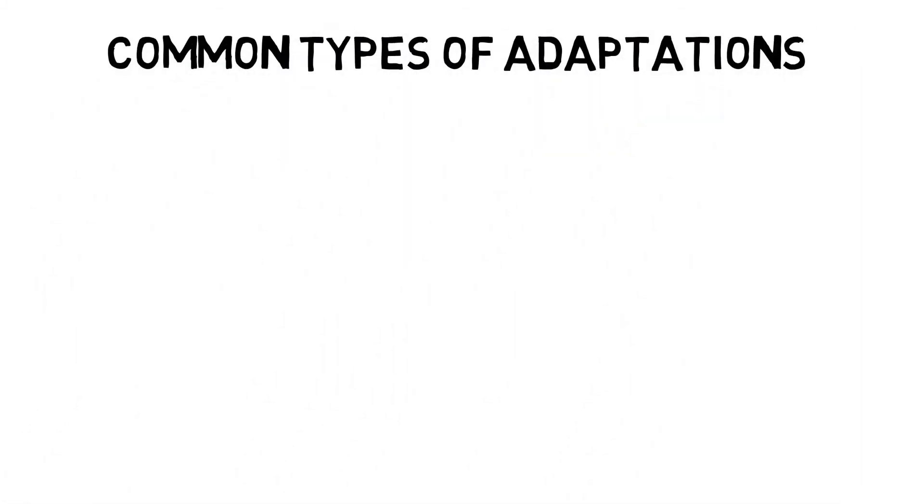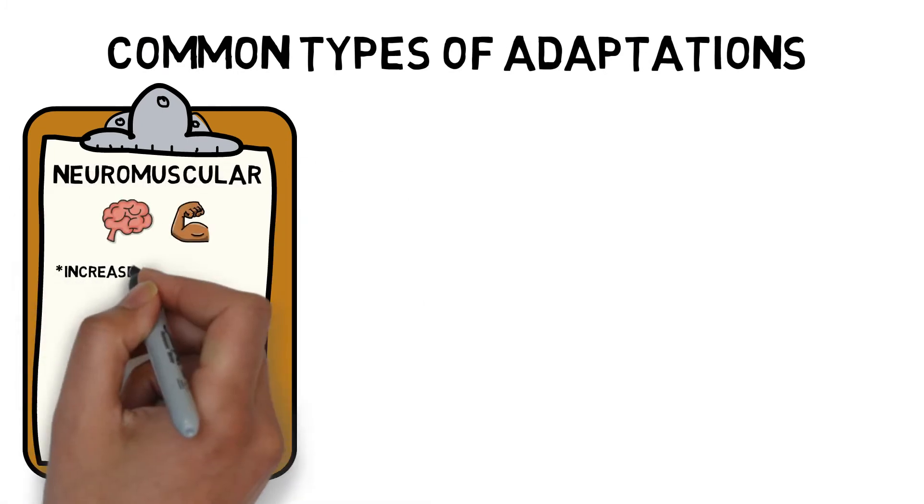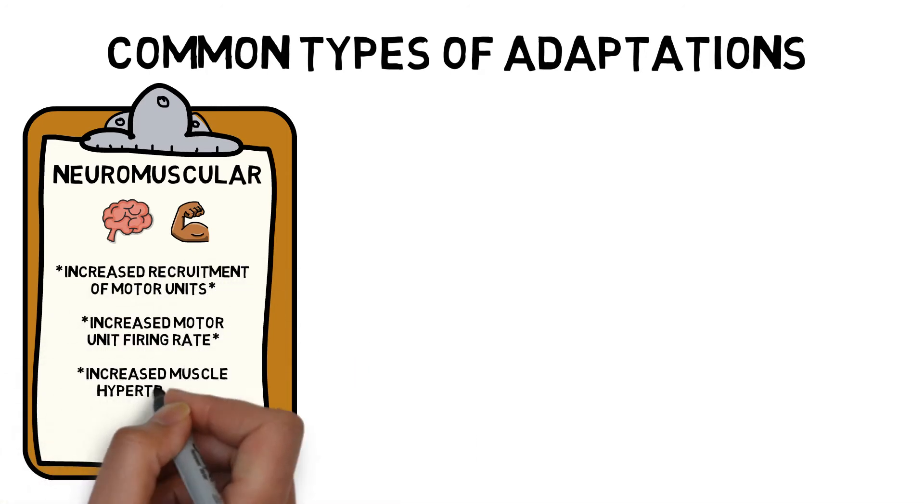There are various types of adaptations that can occur through training. Common neuromuscular adaptations include increased recruitment of motor units, increased motor unit firing rate, increased muscle hypertrophy, and increased mitochondria efficiency.